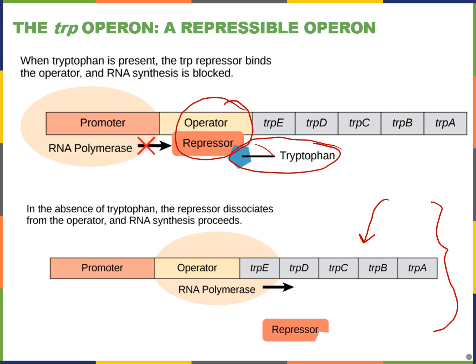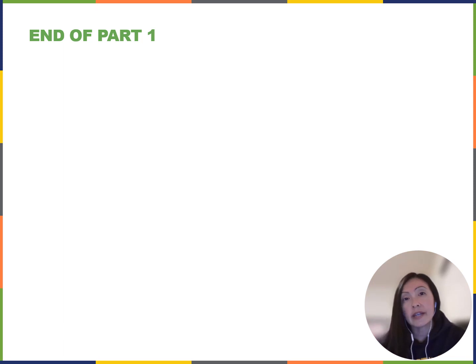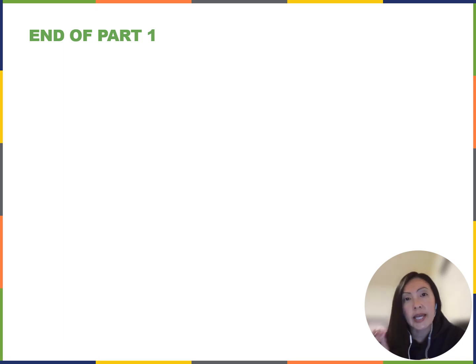Once you run out of tryptophan, the operon turns back on, so it constantly goes back and forth to regulate how much tryptophan is in the cell. That takes us to the end of our first video. For our second video in chapter 16, we'll look at the lactose operon as well as epigenetic regulation.